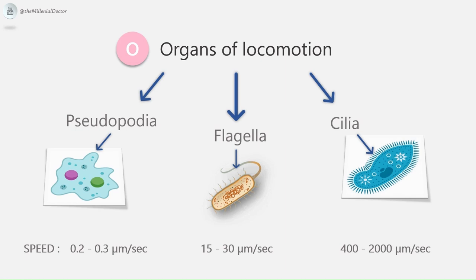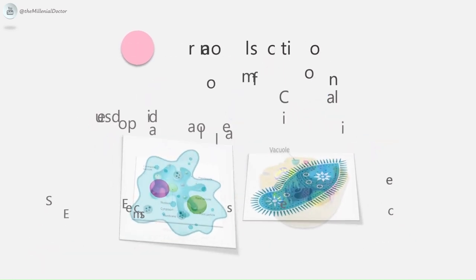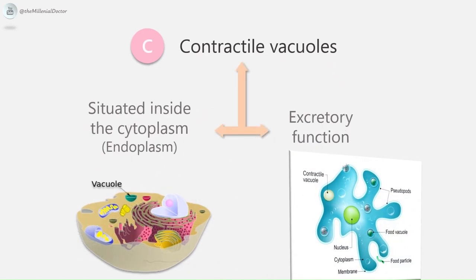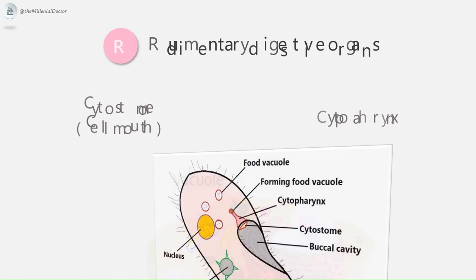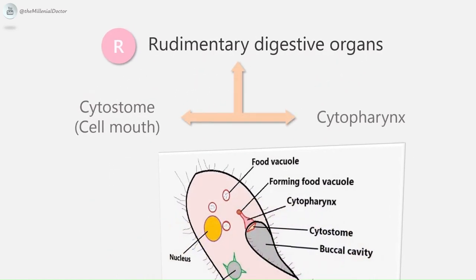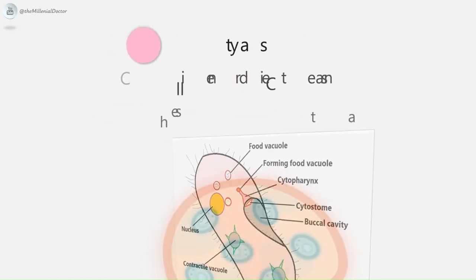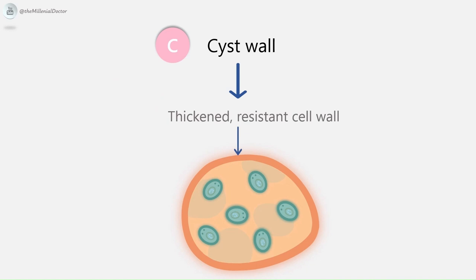This is comparable to a person walking, a person in a car, and a person traveling in a jet. Next are contractile vacuoles, situated inside the endoplasm, with the function of excretion — throwing out waste products from the cell. Next are rudimentary digestive organs of two types: the cytostome (cell mouth) and the cytopharynx, seen in the organism Balantidium coli. Next, the cyst wall is a thickened, resistant cell wall seen in the cystic stage of the parasite.